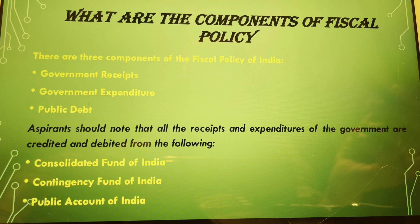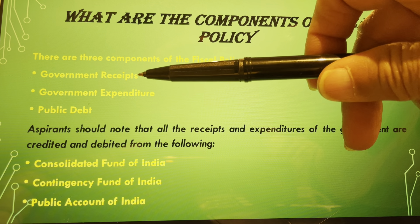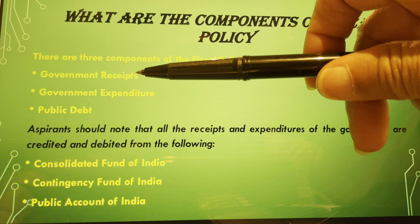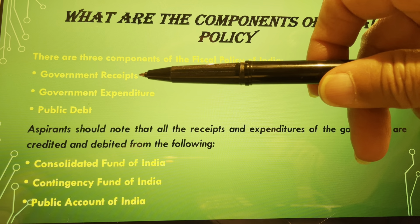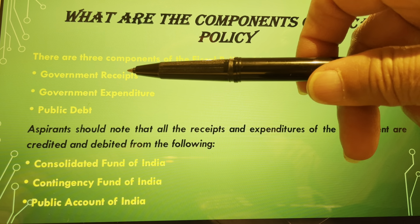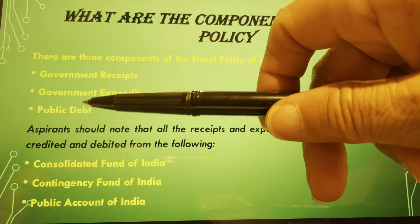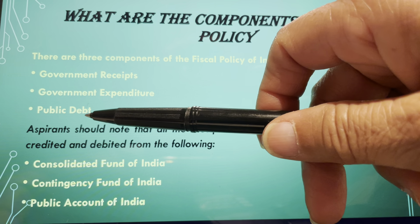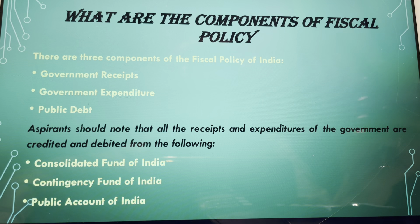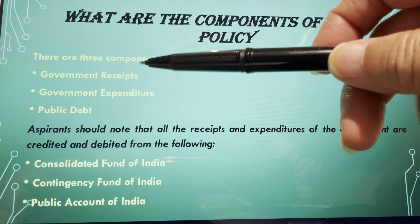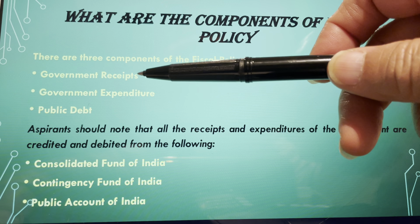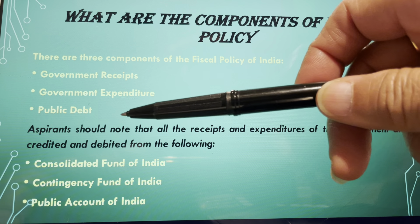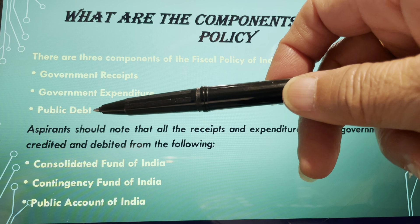There are three components of fiscal policy: government receipts (revenues of the government), government expenditure (spending from receipts as well as borrowings from banks or other sources), and public debt. Government expenditure may be planned or non-planned, and public debt includes borrowings and liabilities.